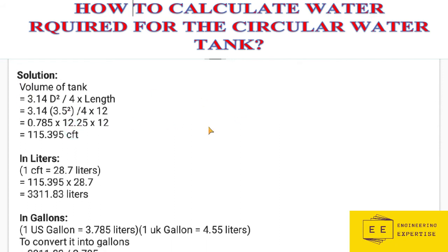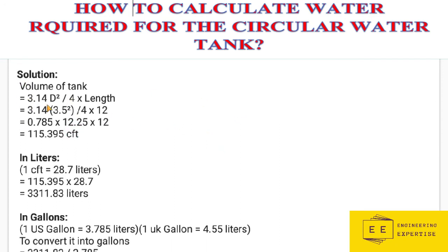To solve the numerical, we calculate the volume of the tank. The formula to calculate the area of a circle or circular things is π d² / 4. The pi value is 3.14. So the formula becomes: π d² / 4 multiplied by the depth of the tank. We have 3.14 × (3.5)² / 4 × 12.